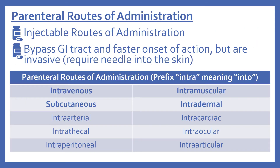Now we'll look at the parenteral routes of administration. These are the injectable routes. They bypass the GI tract and have a faster onset of action, but they're invasive, meaning they require a needle into the skin. The parenteral routes mostly begin with the prefix intra-, meaning into. The four main ones we'll look at in detail are intravenous, intramuscular, subcutaneous, and intradermal.